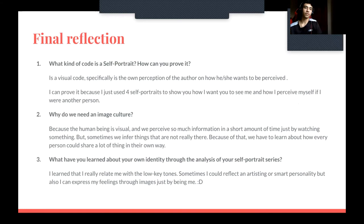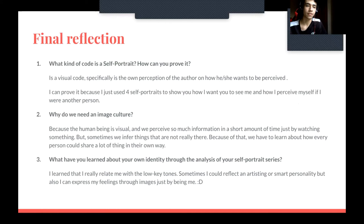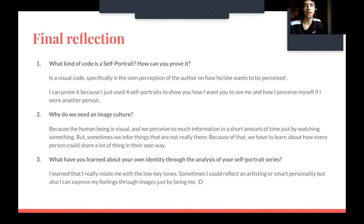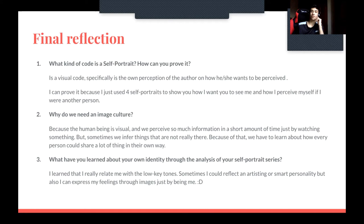For the final reflection, the first question is: what kind of code is a self-portrait and how can I prove it? I think it's a visual code because it's the author's own perception of how he or she wants to be seen. I can prove it because I used a self-portrait to show how I want you to see me and how I perceive myself if I were another person.